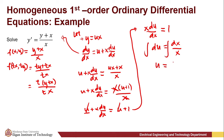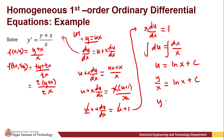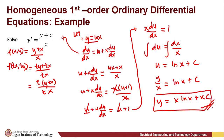Integrating both sides gives u = ln(x) + C. Substituting back the value of u, we have u = y/x, so y/x = ln(x) + C. Solving for y, we have y = x · ln(x) + Cx. This is the solution for the homogeneous differential equation y' = (y + x) / x.